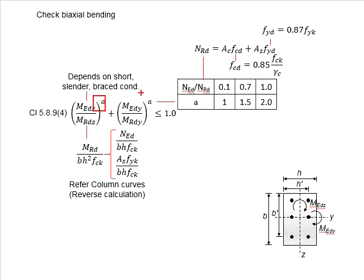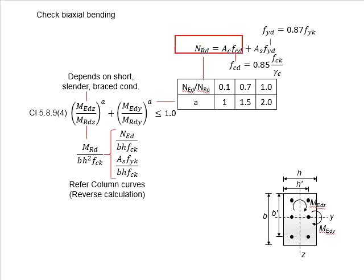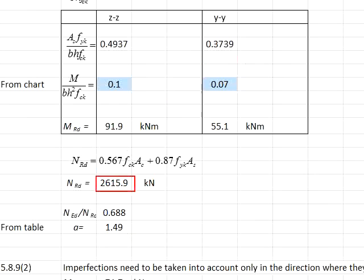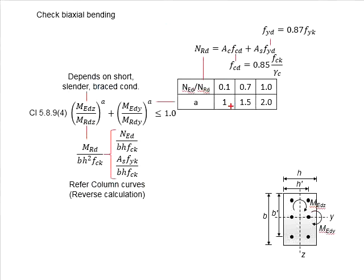You need to determine the factor 'a', which is determined from the table using the ratio of Ned to NRd. You will need to compute the NRd using these equations, which gives NRd equal to 2615.9 kN. The ratio between Ned and NRd is equal to 0.688. Use interpolation for the ratio of 0.688 to obtain the factor 'a'.